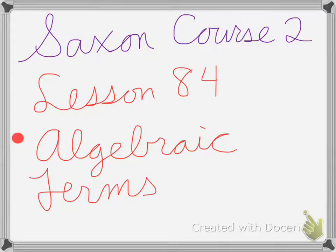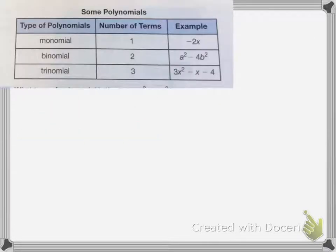Saxon Course 2 Lesson 84 is on Algebraic Terms. Algebraic terms are the letters we use to represent a number that we are not sure about.